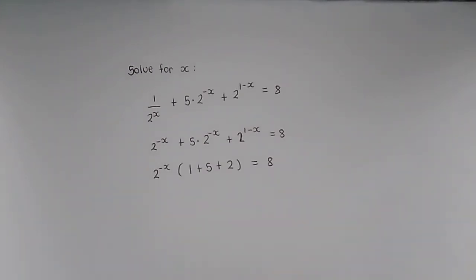That leaves us with 1 plus 5 plus 2 in the brackets. We now just need to simplify this and then solve for x. Simplifying gives us 2^(-x) times 8 equals 8.